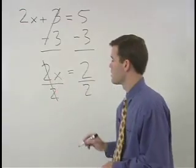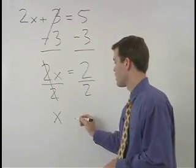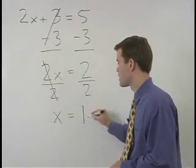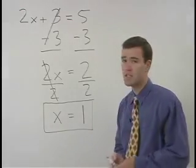On the left, the 2's cancel and we're left with x. On the right, 2 over 2 simplifies to 1. So our answer is x equals 1.